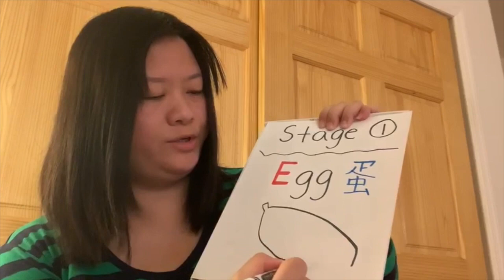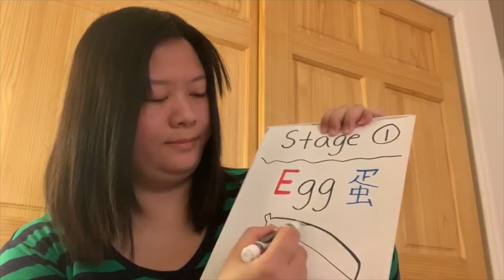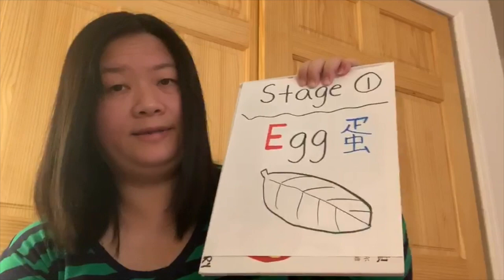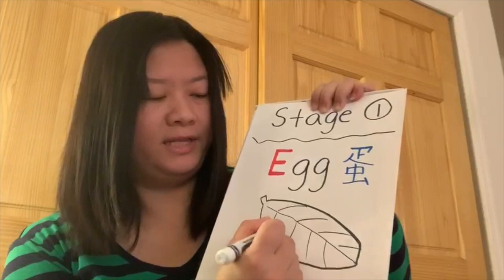And then we're going to draw some lines. Like that. After that, don't forget that we still have the egg. 大家不要忘記,我們還有一個蛋。And then, we're going to make a big circle on the leaf.